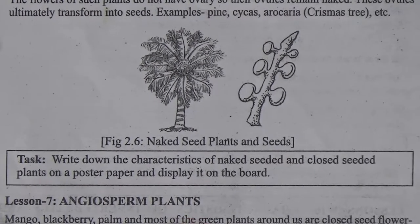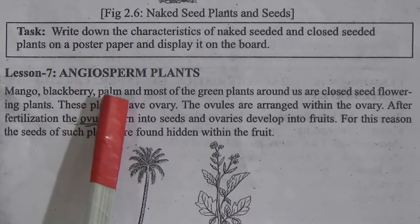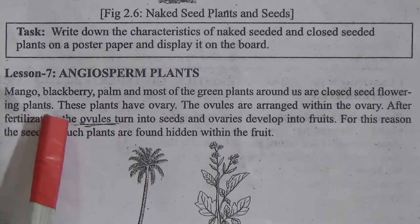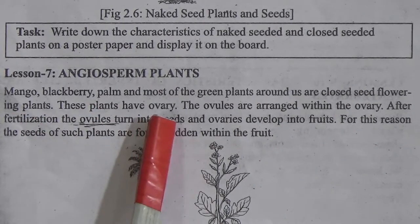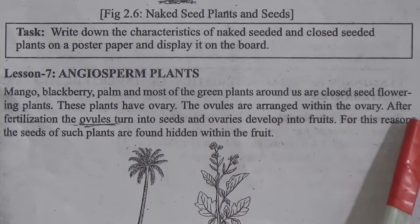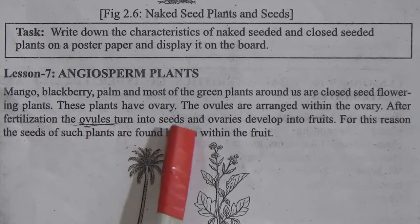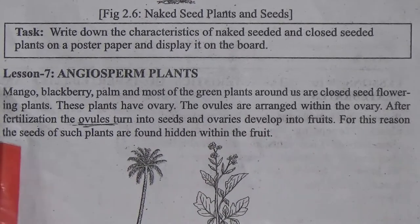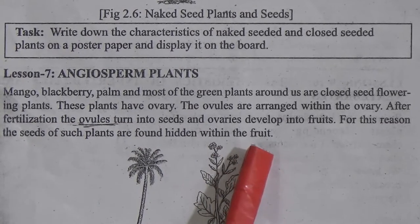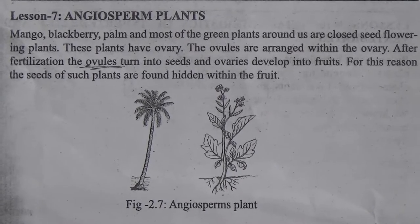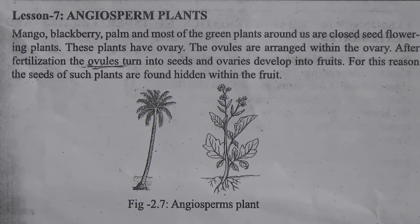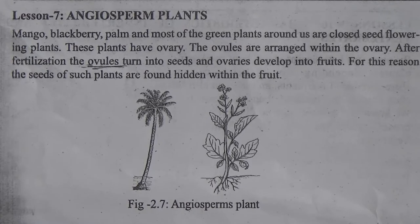Now we go to lesson 7: angiosperm plants. Mango, blackberry, palm, and most of the green plants around us are closed seed flowering plants. These plants have an ovary. The ovules are arranged within the ovary. After fertilization, the ovules turn into seeds and the ovaries develop into fruits. For this reason, the seeds of such plants are found hidden within the fruits. Mango seeds are inside the mango and jackfruit seeds are inside the jackfruit — they are called angiosperm plants because their seeds are inside the fruit.